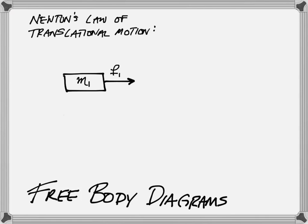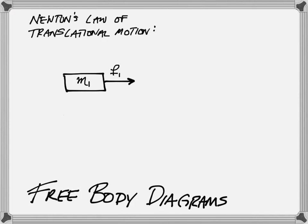We know exactly how this is going to behave based on Newton's law of translational motion, which states that the sum of all forces equals mass times acceleration. We can look at our diagram and see the direction in which we expect the mass to be moving, X1, and the force that's pulling on it, F1. The mass that we see in the translational motion law comes from M1.